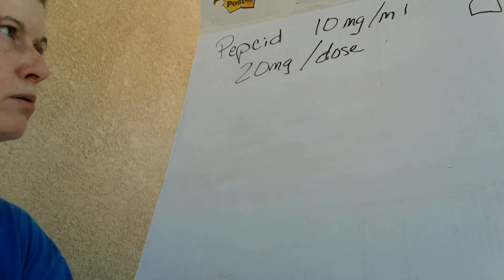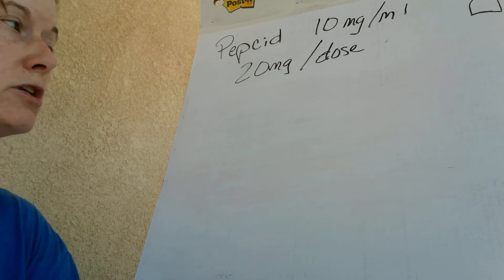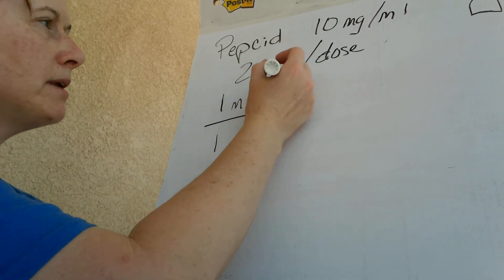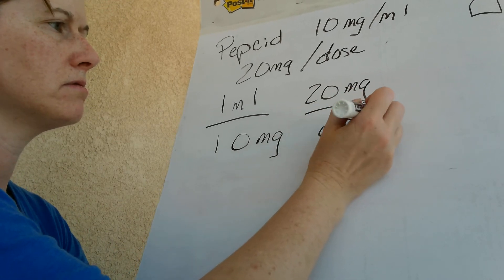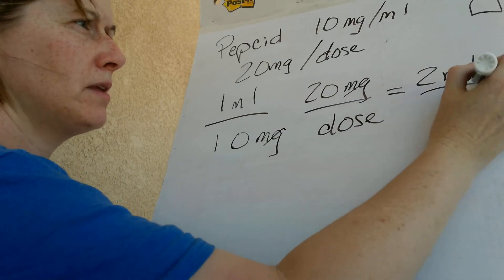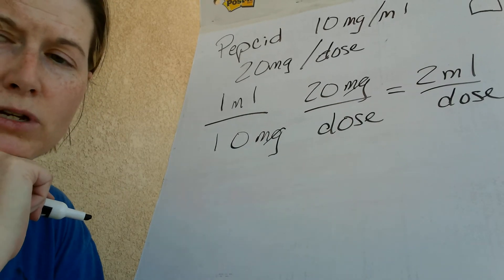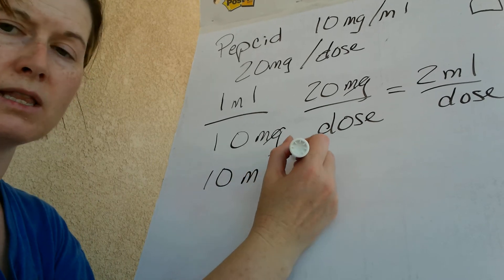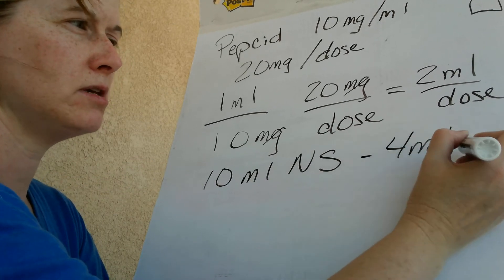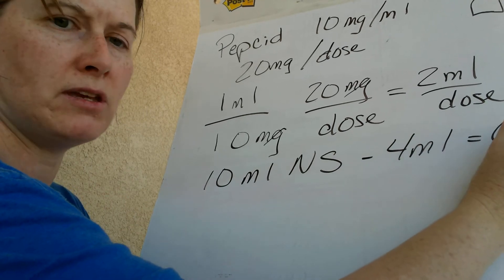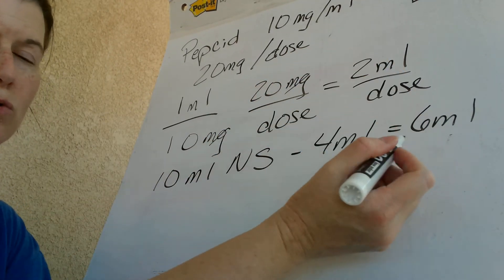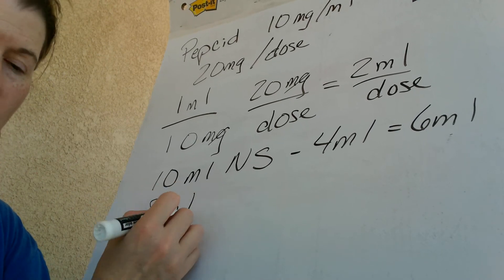We give 20 milligrams per dose, so first I want to know how much to draw up in my syringe. I have 1 mL per 10 milligrams, and I'm giving a 20 milligram dose — that gives me 2 mLs per dose. I pull up 2 mLs in my syringe, but I have to dilute it. So I take a 10 mL syringe of normal saline, squirt out 4 mLs, leaving 6 mLs. Then I draw up the 2 mLs of Pepcid, giving me a syringe with 8 mLs total.